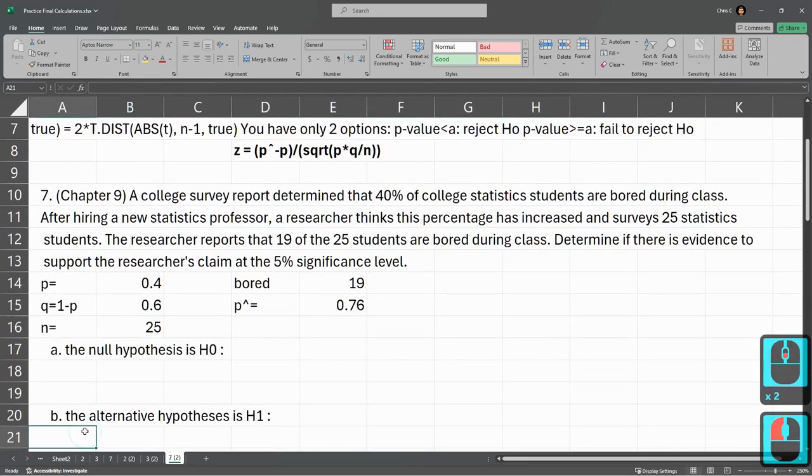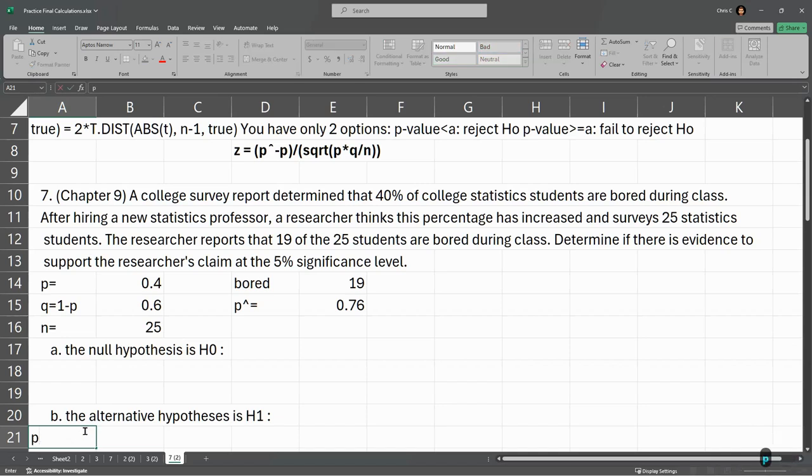The researcher thinks the percentage has increased, so that's the alternative. That's H-1. And it's a claim on the actual proportion of bored students. So it's that P is greater than 0.4. So that's the alternative hypothesis. The null is the opposite, which is P equals 0.4.